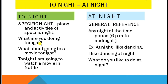For example: 'What are you doing tonight?' — tonight means this night. Another example: 'What about going to a movie tonight?' or 'Tonight I am going to watch a movie on Netflix.' So those are examples of using 'tonight.'